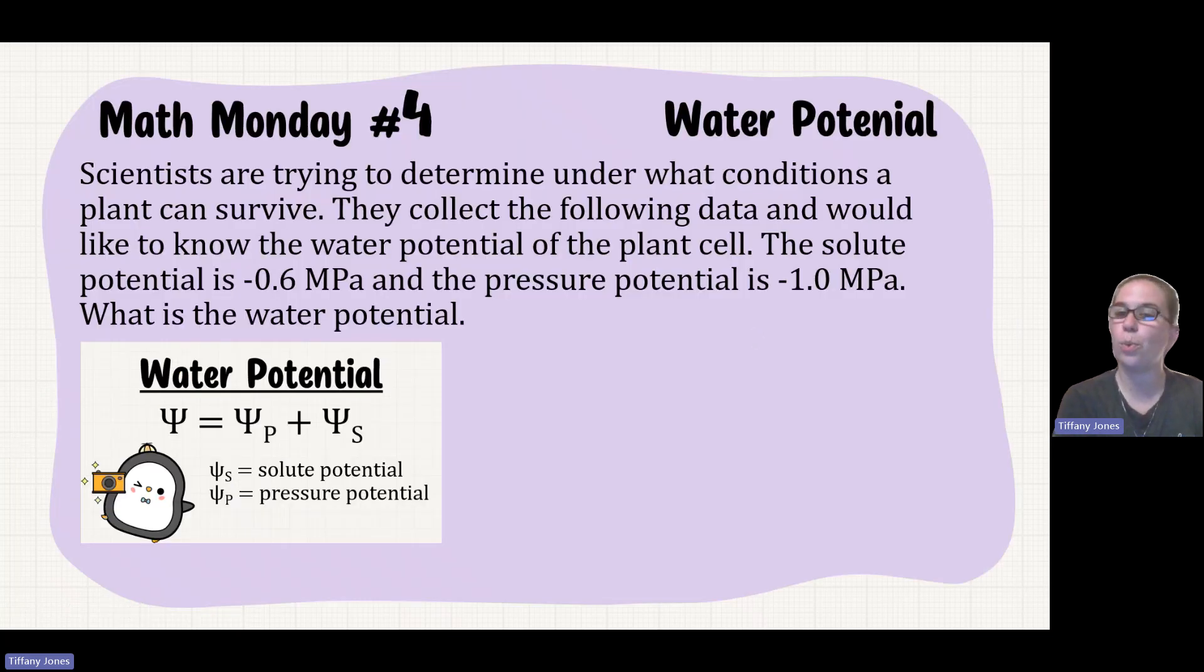Scientists are trying to determine under what conditions a plant can survive. They collect the following data and would like to know the water potential of the plant itself. The solute potential is negative 0.6 megapascals and the pressure potential is negative 1.0 megapascals. What is the water potential?